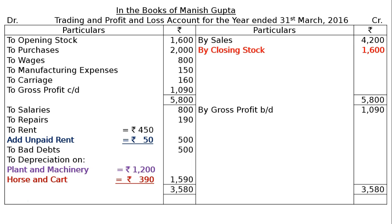All office expenses total Rs. 3580, whereas our gross profit is only Rs. 1090. We have incurred a loss. By net loss carried down, that is Rs. 2490. Net loss CD is Rs. 2490.